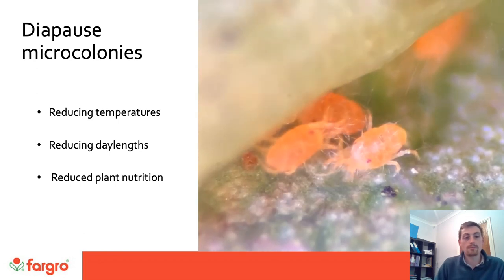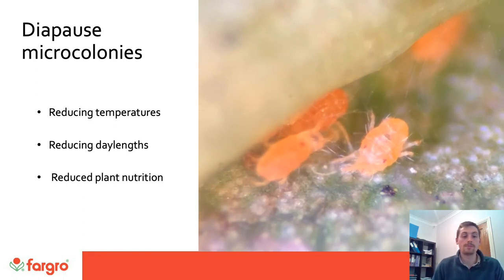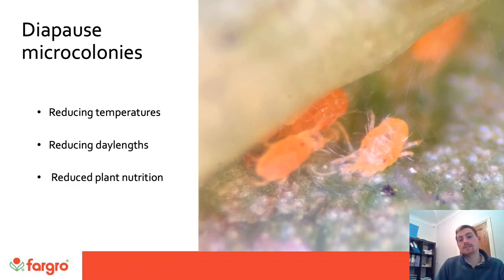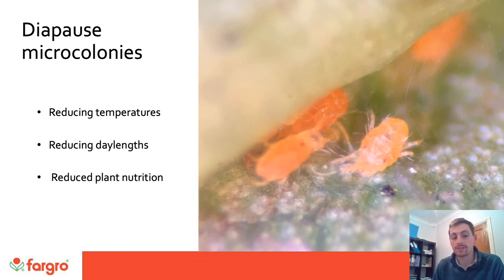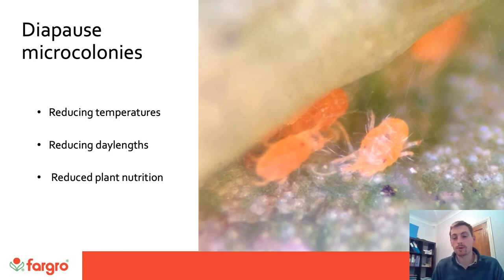Looking at the diapause micro colonies: these are generally made up of mated females, however there are also males present. These turn orange and enter diapause in response to factors such as reducing temperatures, reducing day lengths, and reduced plant nutrition — over the winter months when light is reduced as well as plant nutrition. This stage really represents the time when it is good to target these colonies, as they are at the smallest populations, before they emerge in spring and when they're causing the smallest amount of damage to the crop.